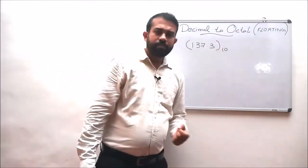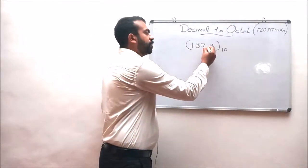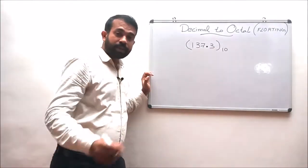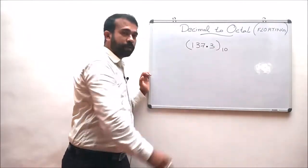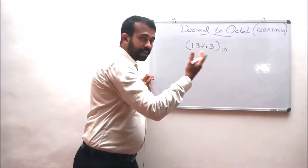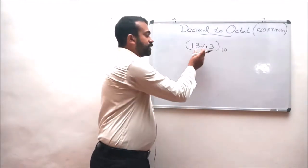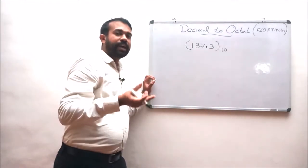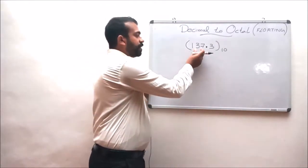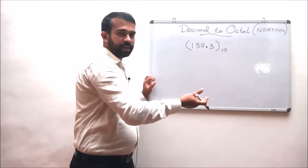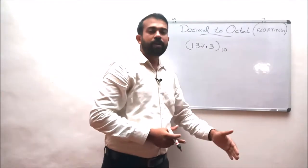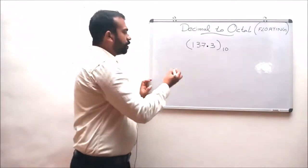A floating number consists of a decimal or floating point in between two numbers. The left side of this floating point is known as the whole number part, and the right side is known as the fractional part. Since it has two portions, the conversion can be done in two different steps. In the first step we convert the whole number part, and in the second step we convert the fractional part into its octal equivalent.